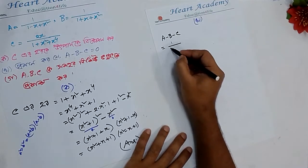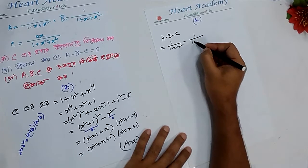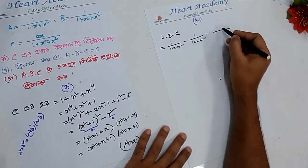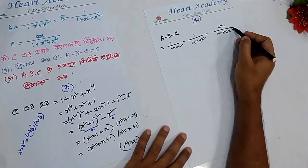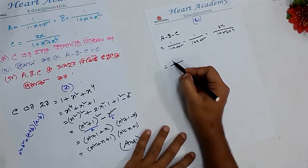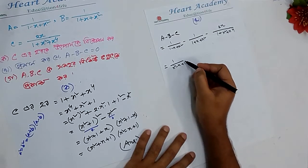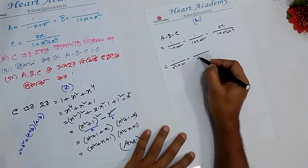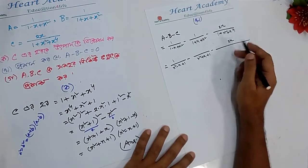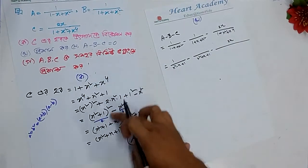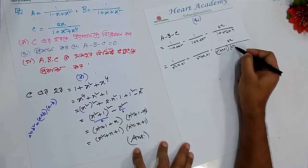1/(1-x+x²) minus 1/(1+x+x²). Here we go: 1 plus x² plus x² over 4. I'm going to add: 1 plus x² minus x² over 4. So we get: x²+x+1 minus 2x over (x²+x+1)·(x²-x+1).